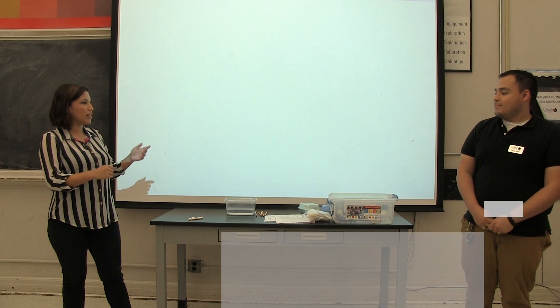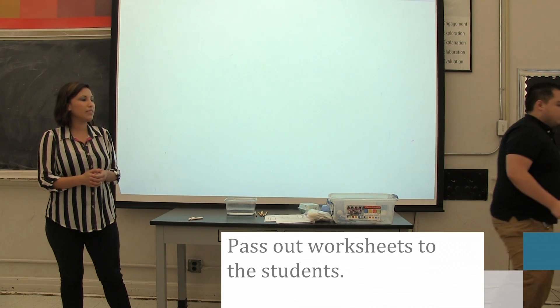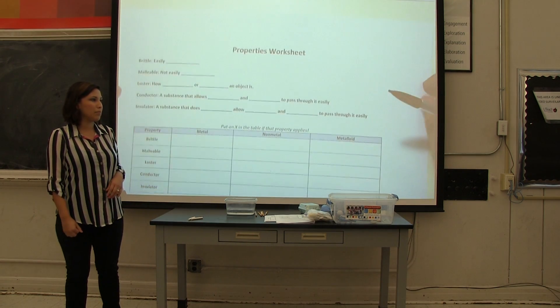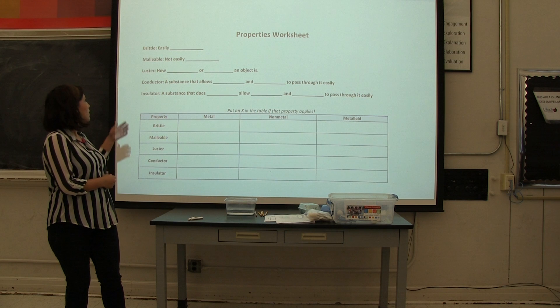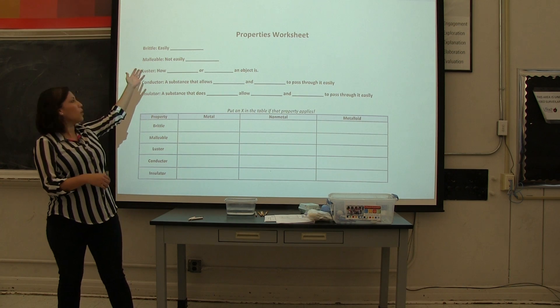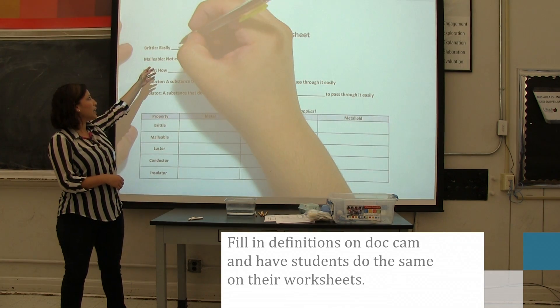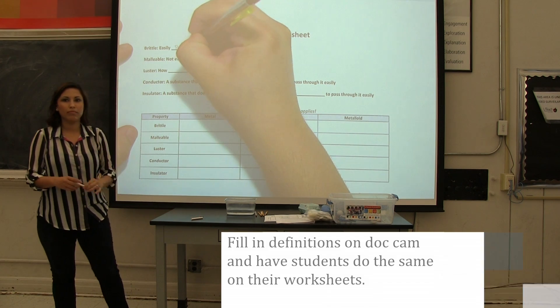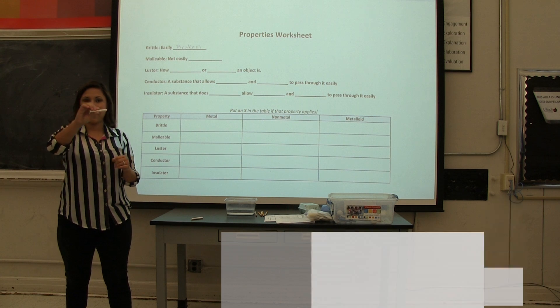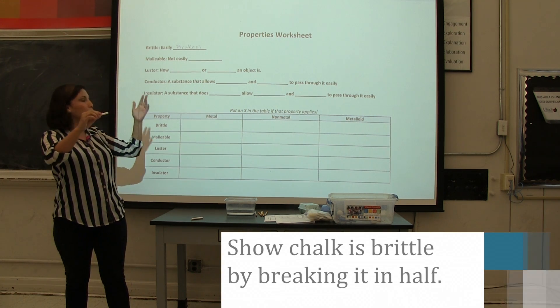All right, so Claire, what did y'all come up with? Malleability. Malleability, very good. Mary, what did you come up with? Luster. Luster, all right. So we're going to go ahead and pass out the worksheet. It's a physical properties worksheet. Mr. Pedro is going to pass it out and we're going to show it up on the doc cam. So our first word is brittle. So what is brittle anyway? Easy to break. Easy to break. So on our worksheets we're going to go ahead and write: brittle, easily broken.